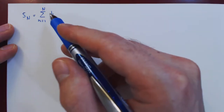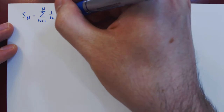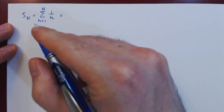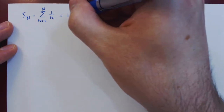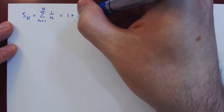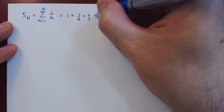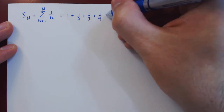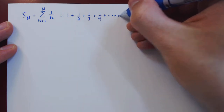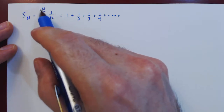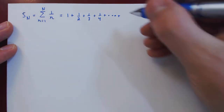It's always more intuitive to write out the sum in expanded form. So n begins at 1: 1 over 1 is 1, then plus when n is 2, 1 over 2, n is 3, 1 over 3, plus 1 over 4, plus all the way up to the upper bound of summation, uppercase N, so we get 1 over uppercase N.